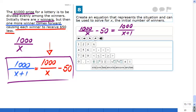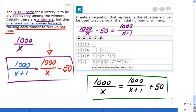Another way will be to say that the initial award, which is $1,000 divided by X winners, will be equal to the late awards, the adjusted award, which is $1,000 over X plus one, plus $50, because initially each one of the winners was receiving $50 more.